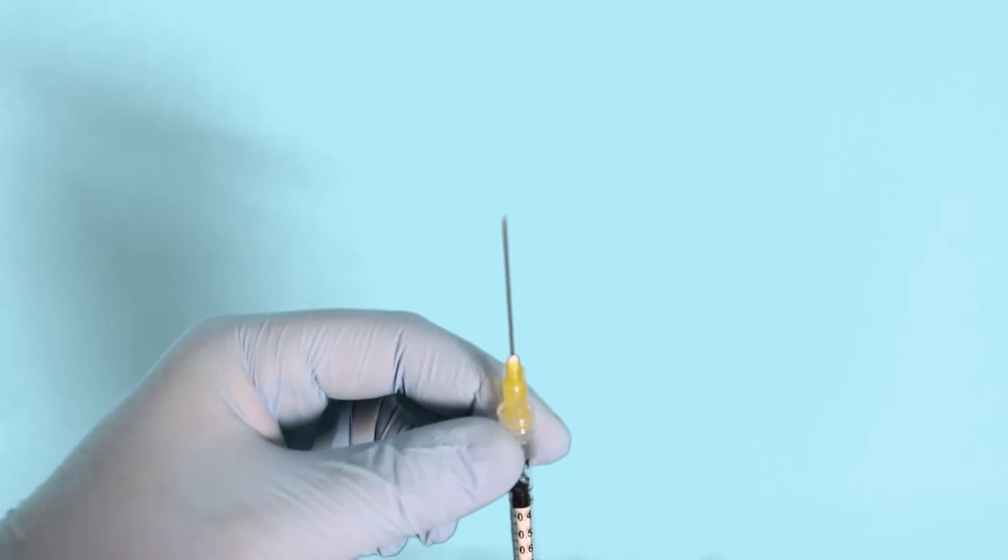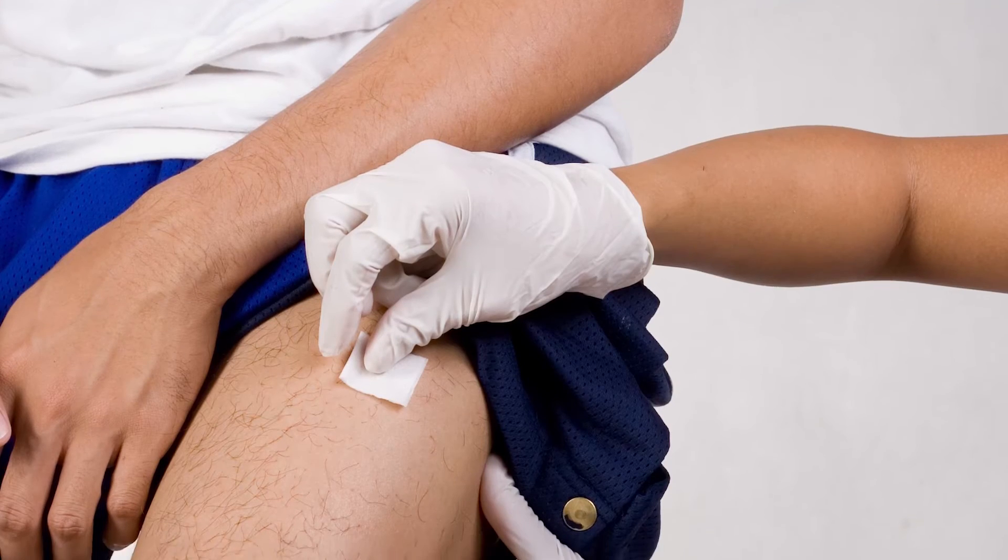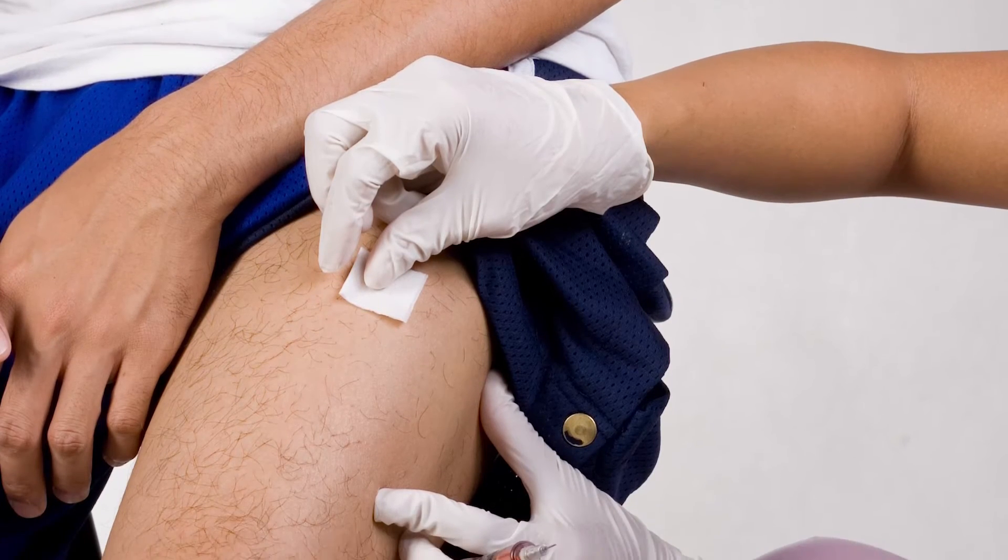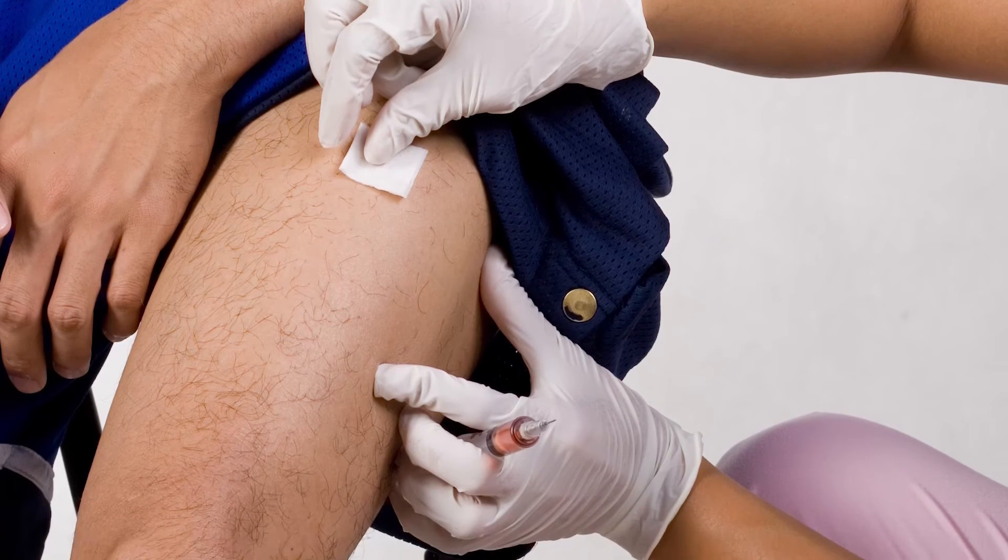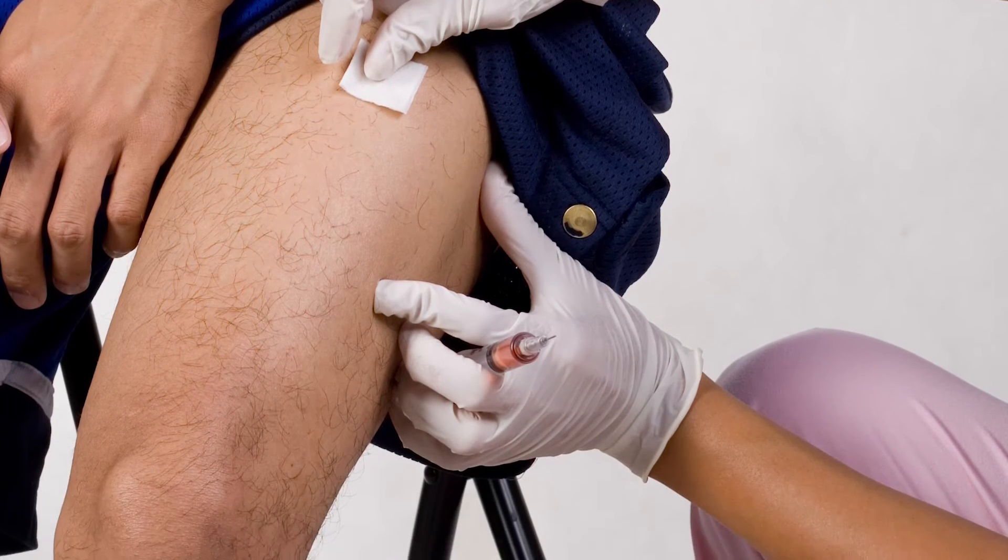The appropriate injection route for epinephrine 1-1000 is intramuscularly or subcutaneously into the anterolateral aspect of the thigh, which is midway down the side of the thigh.